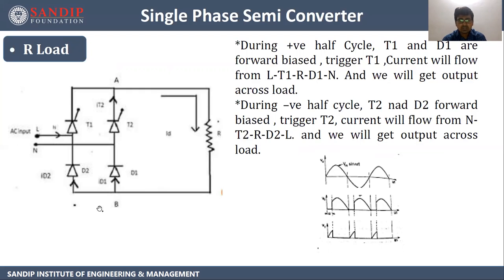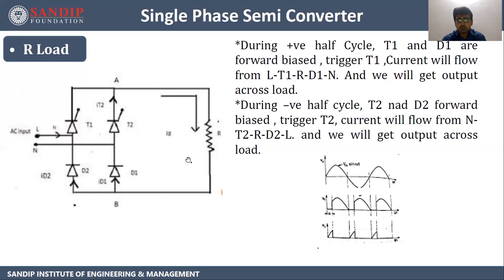When the positive half cycle of the AC supply comes, thyristor T1 and diode D1 will get forward biased. As the thyristor has a gate terminal, we need to trigger it. So during the positive half cycle, we trigger T1. Current will flow from L to T1 to R to D1 to N. As soon as current flows through resistance R, we get the output across the load. During the negative half cycle, T2 and D2 will be forward biased. We trigger T2, and current will flow from N to T2 to R to D2 to L, and we get the output across the load.